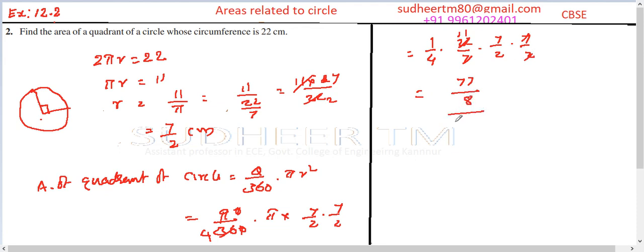4 into 2 is 8, so the area is 77/8 centimeter square.